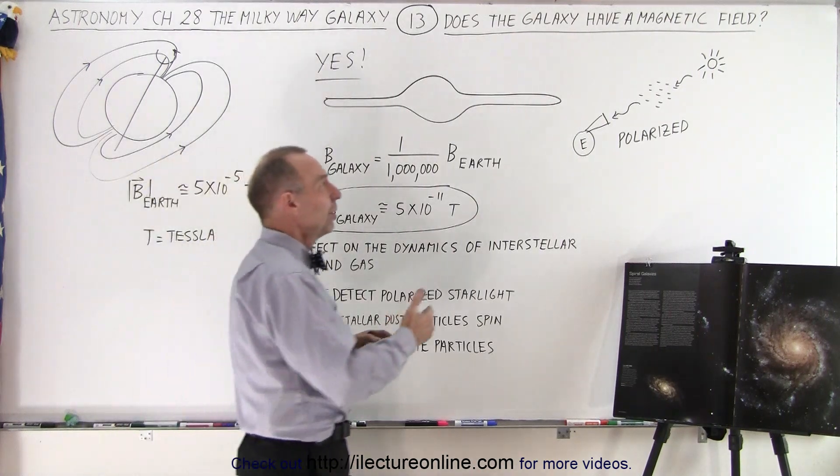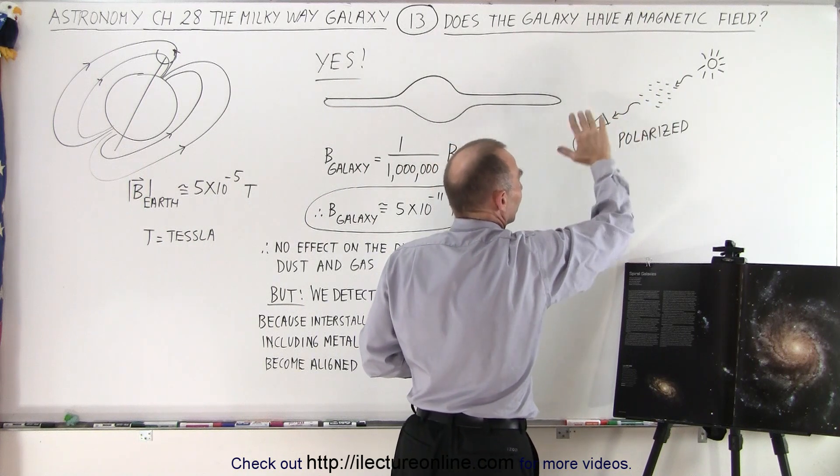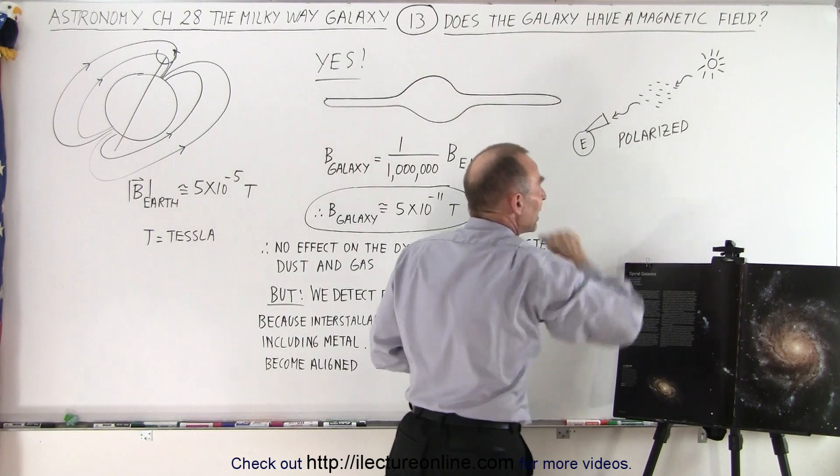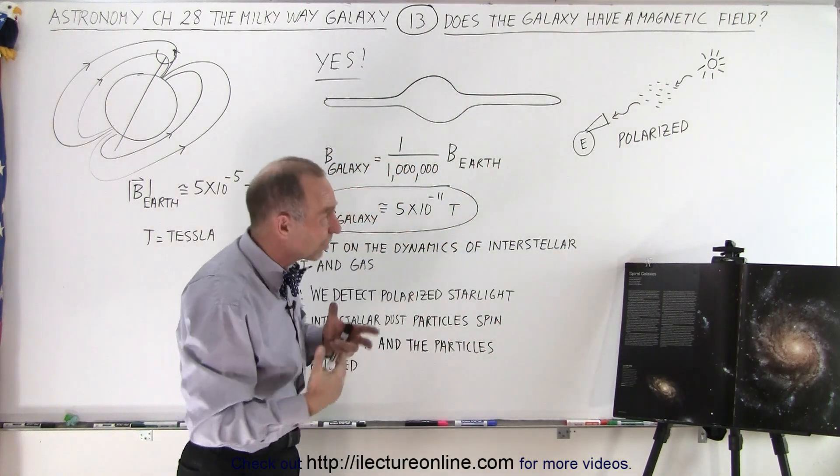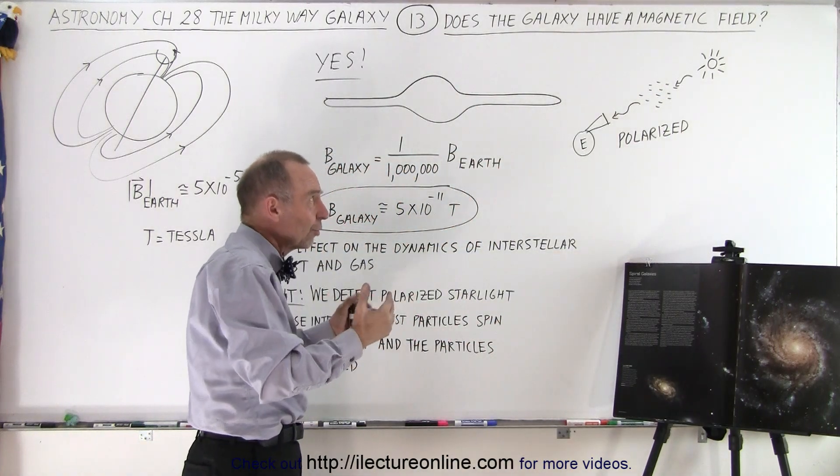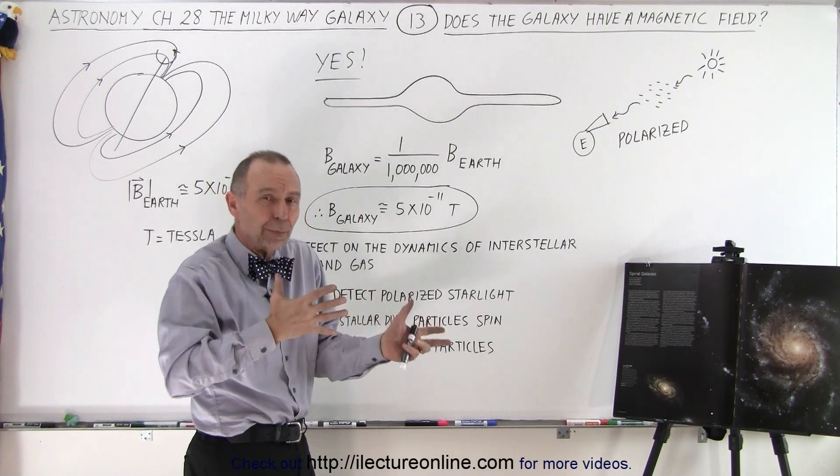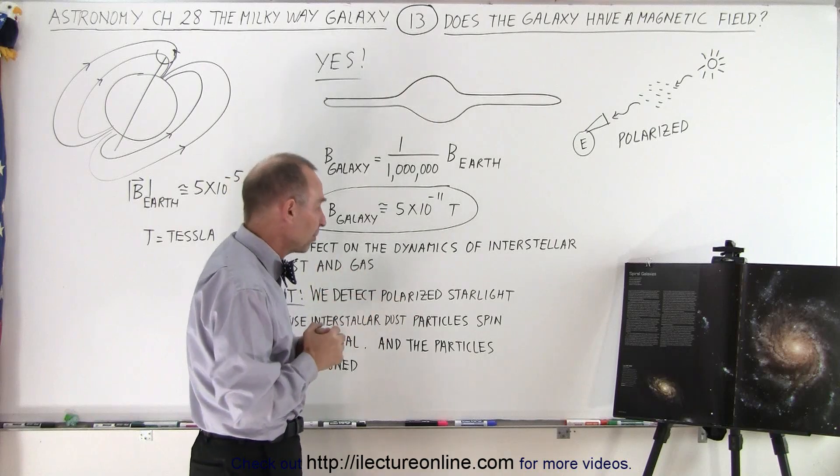And so, for example, we observe starlight coming through to us from a large distance away. And if, in between, there is some particles containing metal that are all aligned in a certain direction, that light will indeed be polarized. So something must be setting those particles up in a certain direction to cause that polarization.